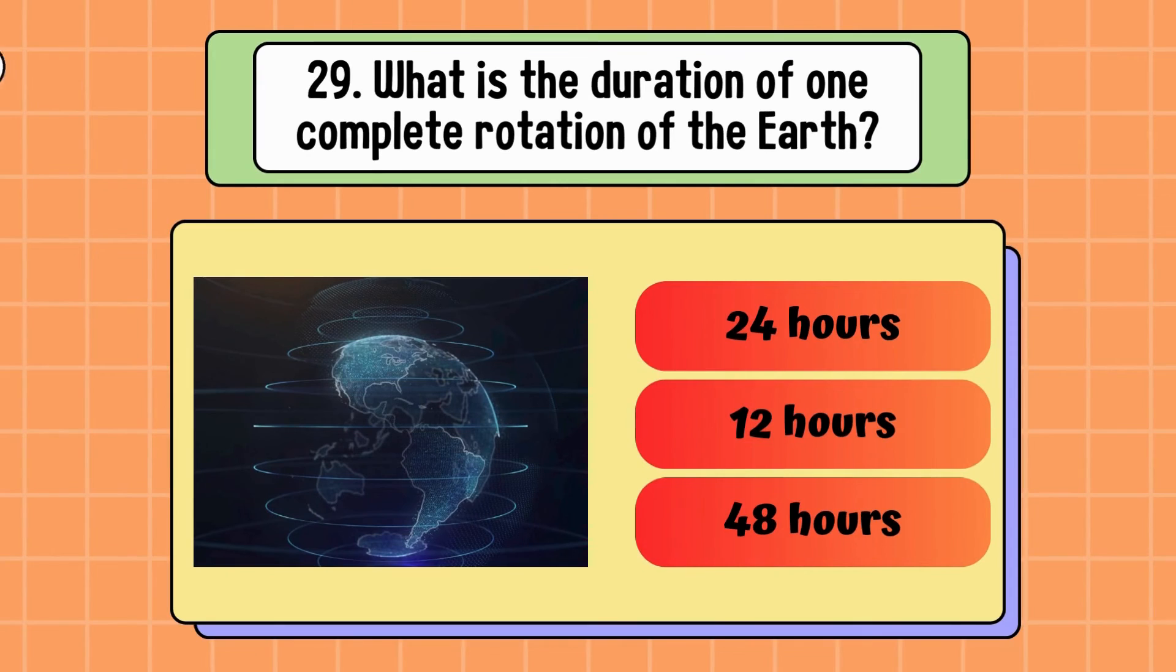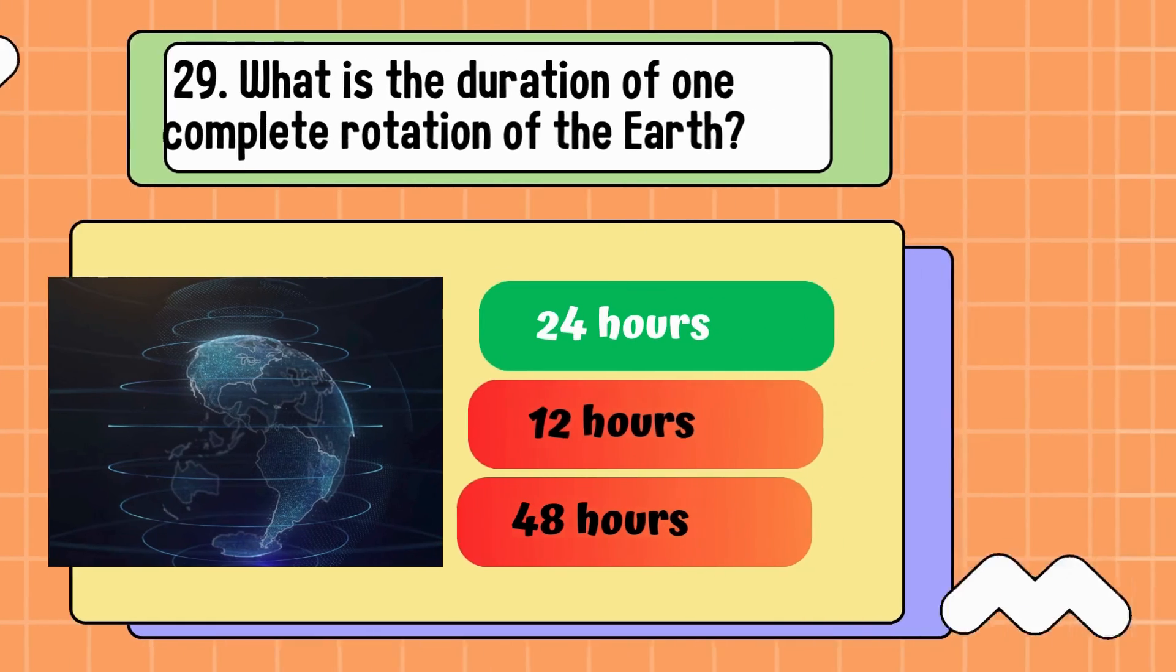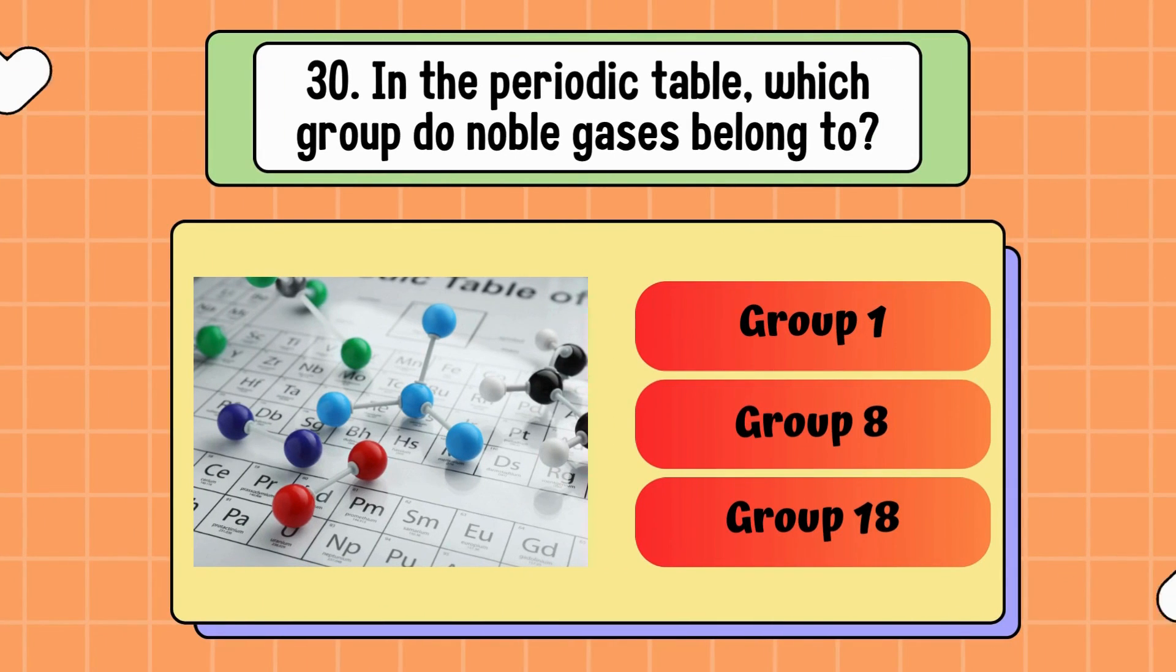What is the duration of one complete rotation of the Earth? 24 hours, 12 hours, or 48 hours? Answer is 24 hours. In the periodic table, which group do noble gases belong to? Group 1, Group 8, or Group 18? Correct answer is Group 18.